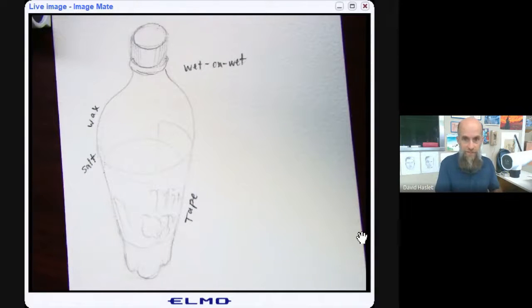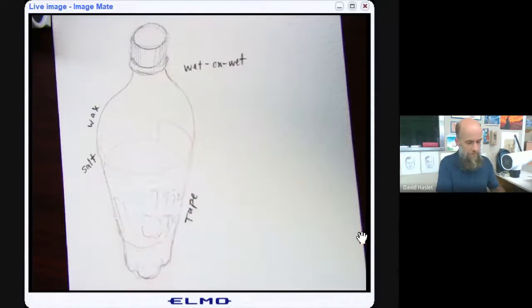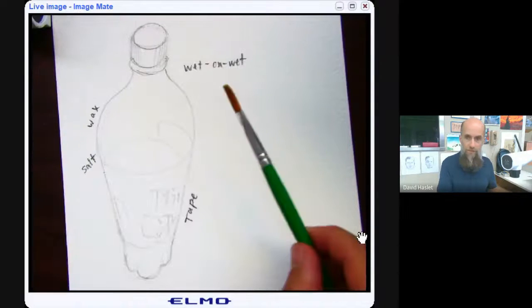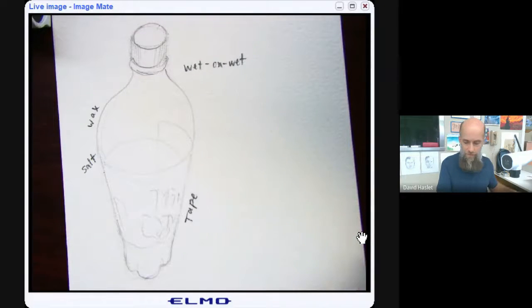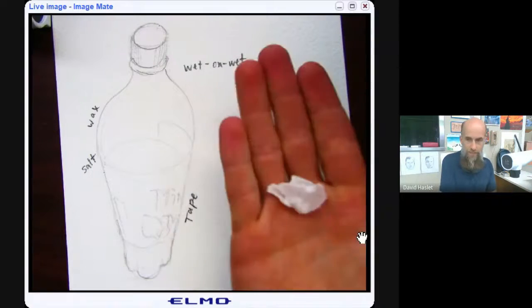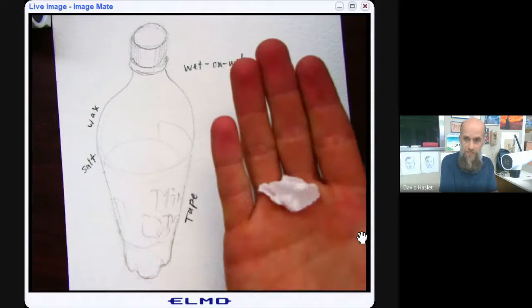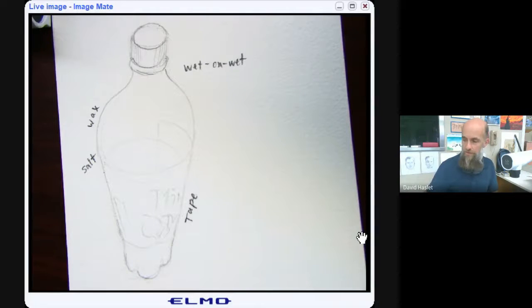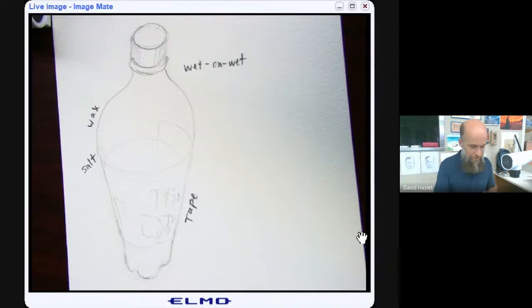So let me show you what supplies I have here. I've got some tape. I've got this paper towel to control how much water and color is inside my brush, which is a small flat brush. I've got some salt, just regular plain salt, and I've got some wax. This is paraffin wax used for canning, but you can also just take a candle if you have at home and try that too. And a container of water, and I've got my palette of colors over here to my right.